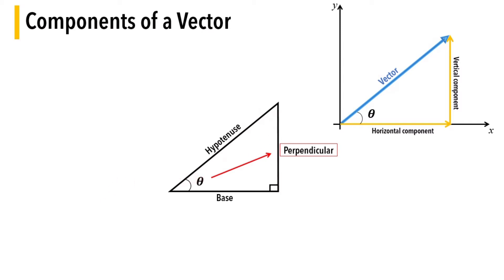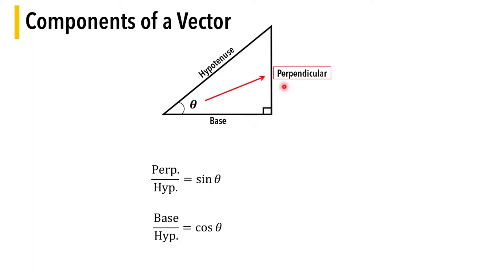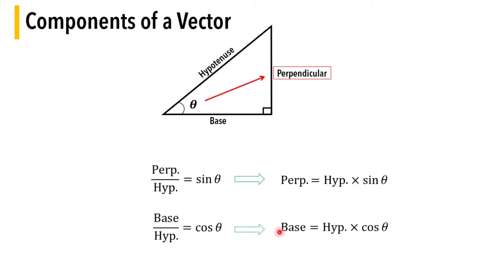By trigonometric ratios, sine theta equals perpendicular over hypotenuse and cos theta equals base over hypotenuse. Since we want to find the components of a vector, we derive: perpendicular equals hypotenuse times sine theta, and base equals hypotenuse times cos theta.